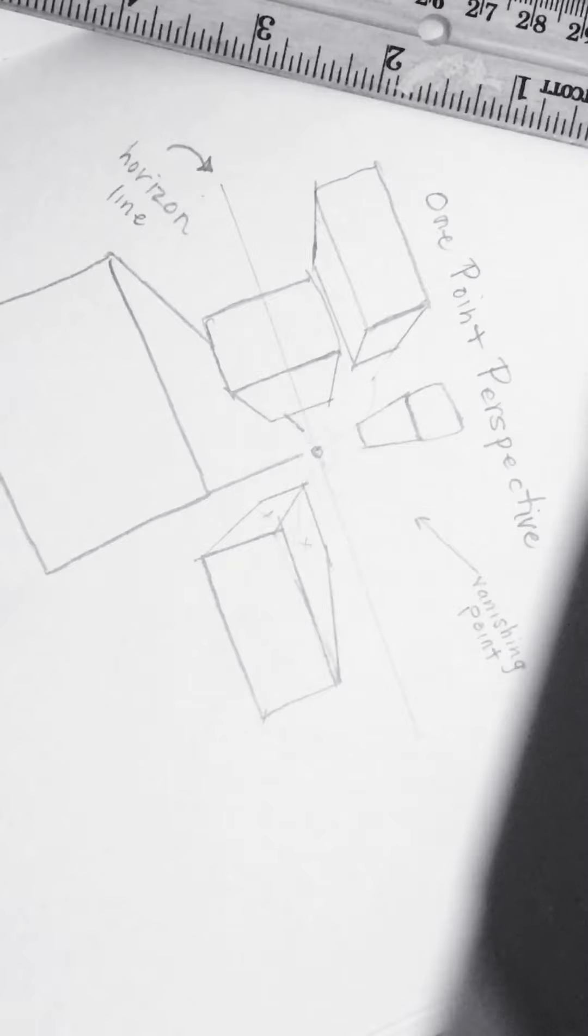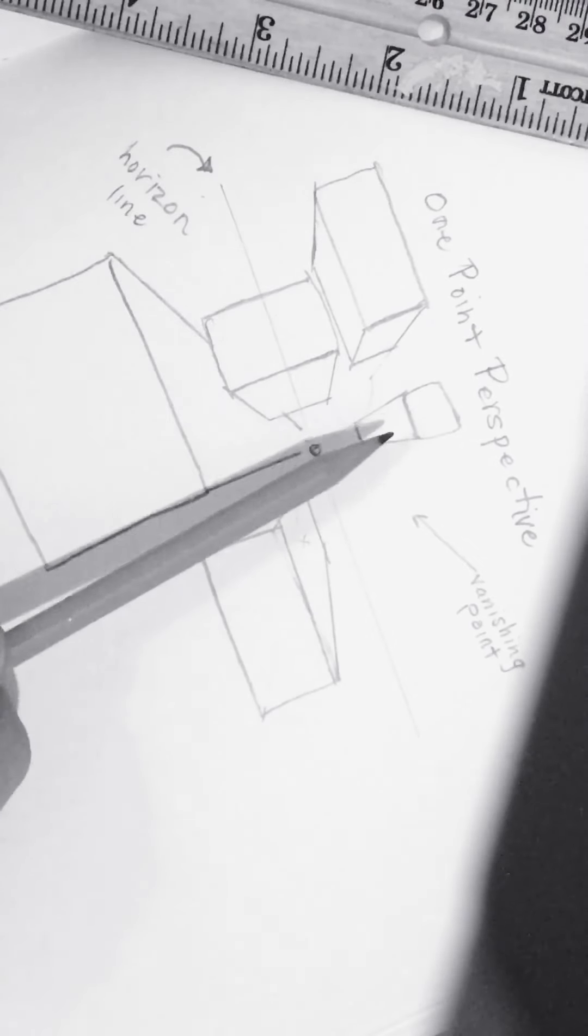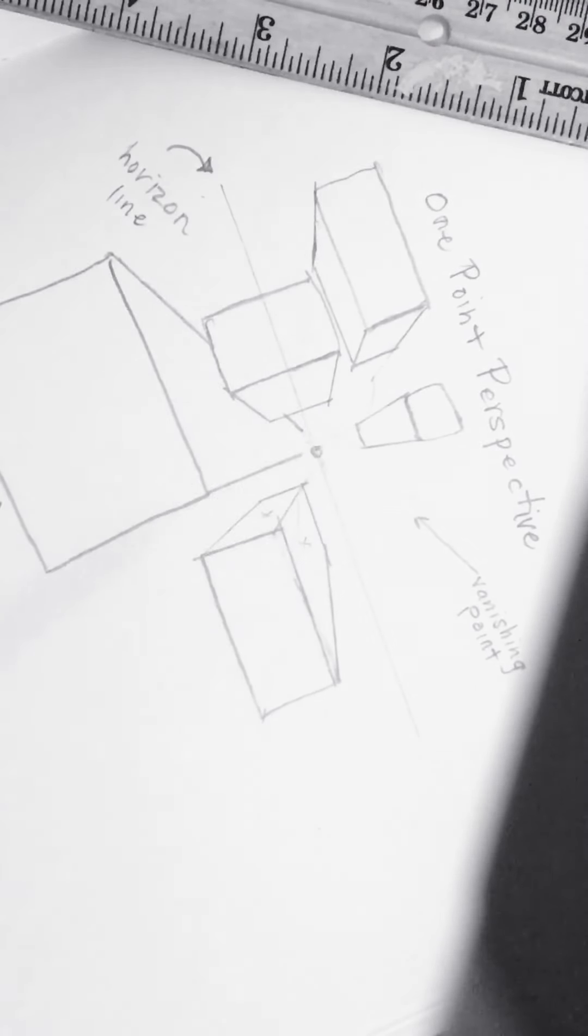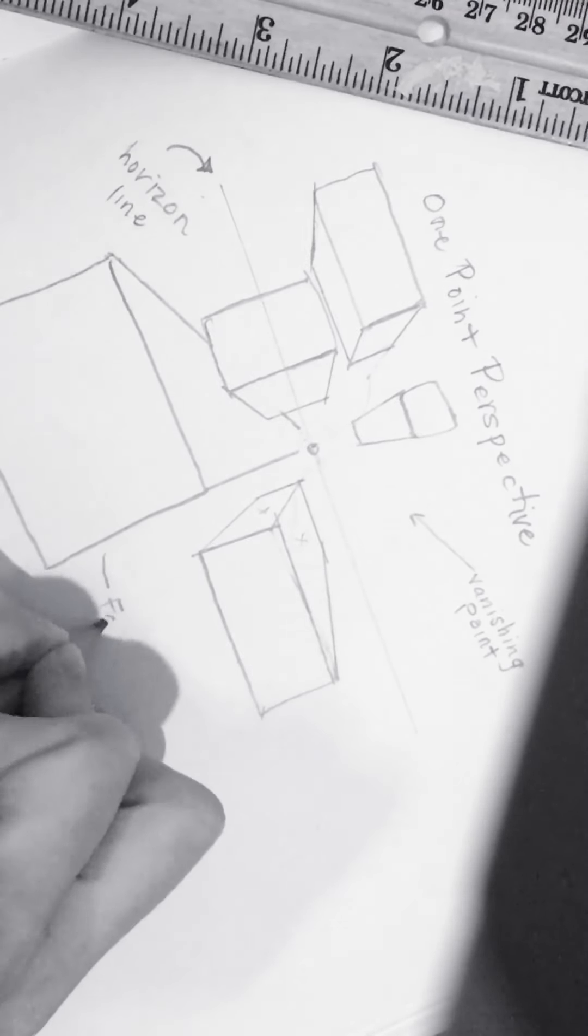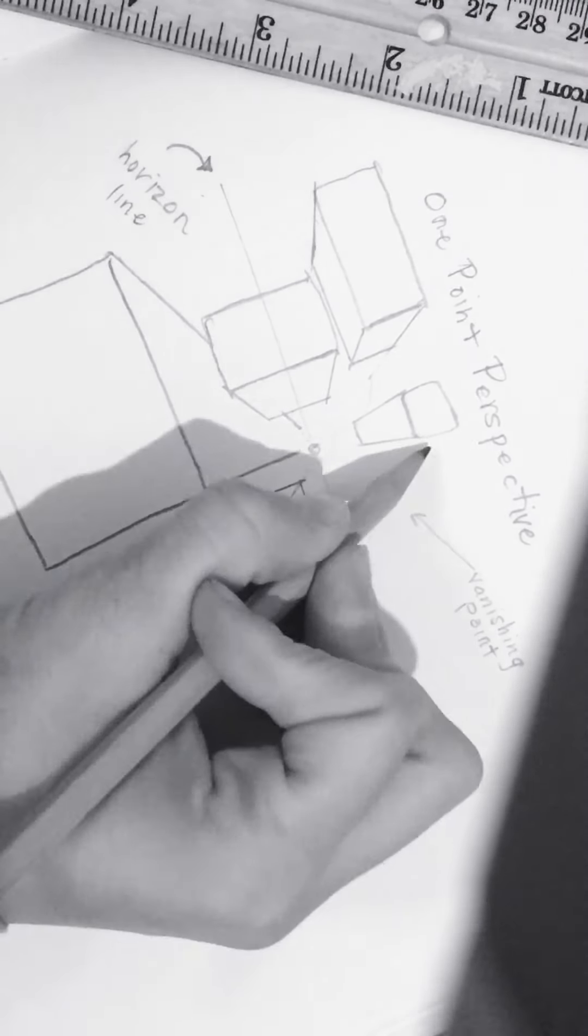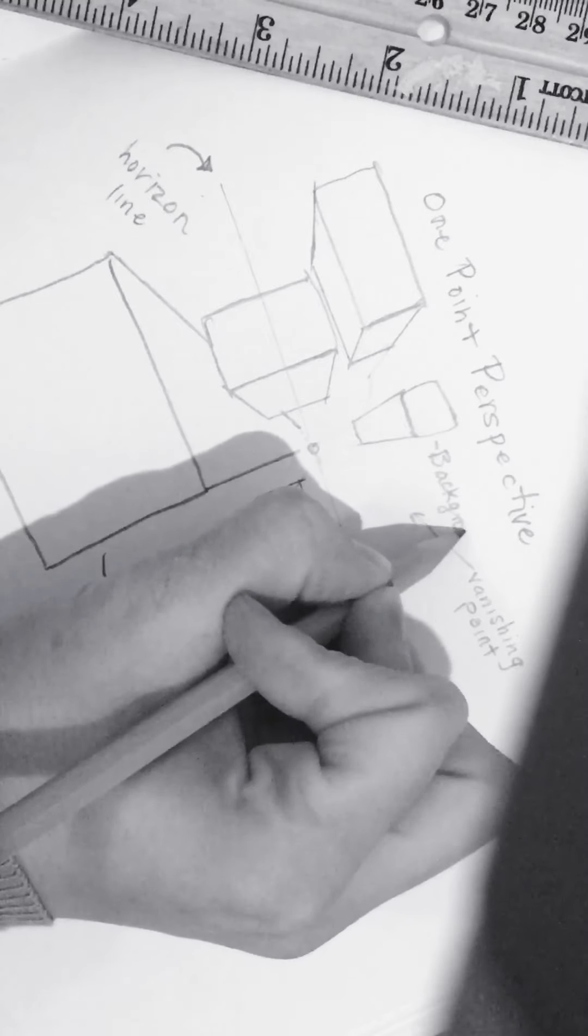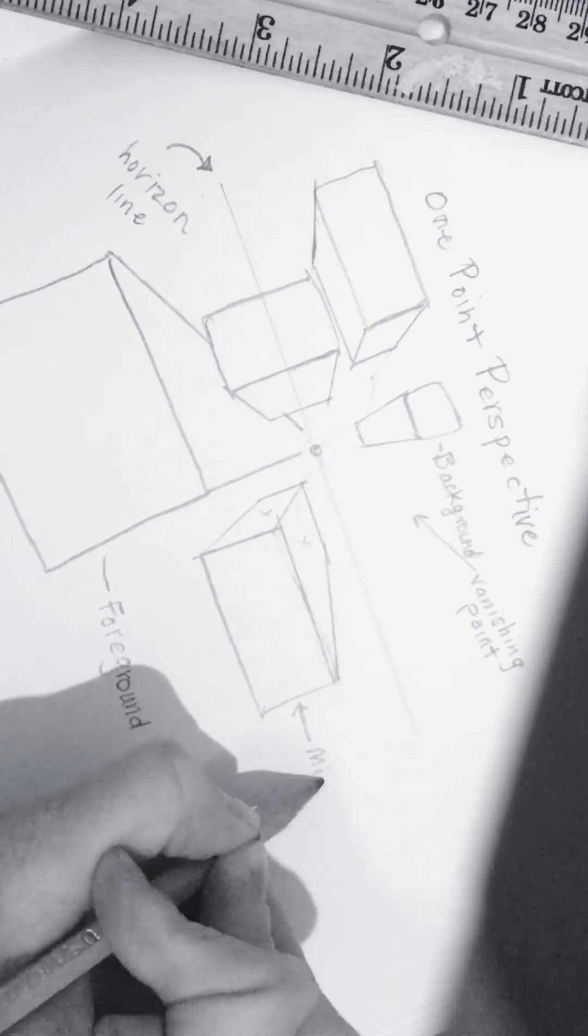Now, just some food for thought. This large box here looks so much closer than this teeny tiny box. So when you make something really, really large like this, it comes closer to your viewer. Whereas this is more in the background. So this is what I would call the foreground because it is closest to the viewer. This I would call background.